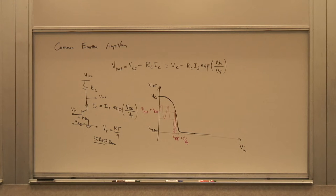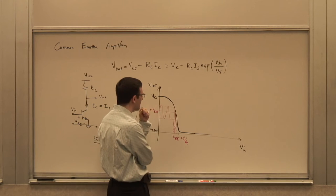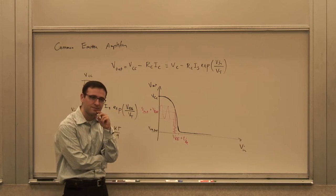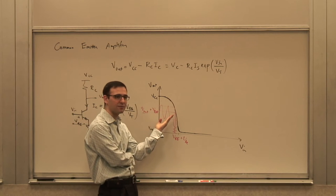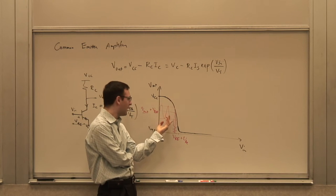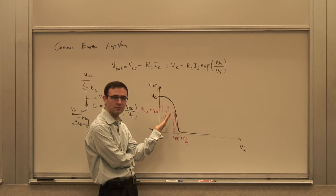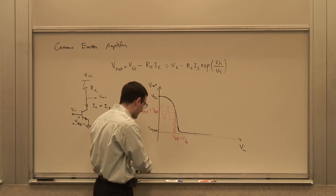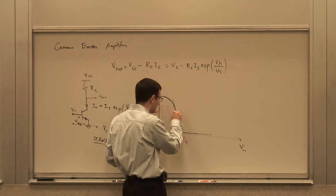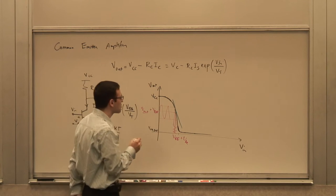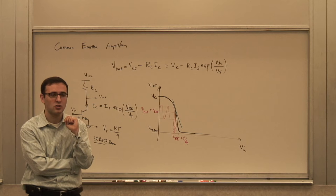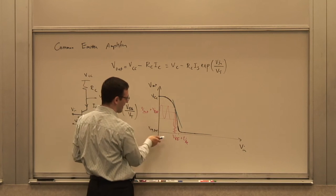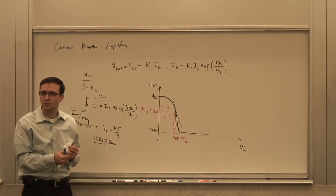Defining gain for a nonlinear system is tricky — it depends on the input. But for small inputs around an operating point, the gain is the slope of the tangent to the transfer curve at that point, which is dVout/dVin. We can already tell this is an inverted amplifier: you increase the input voltage, the output voltage goes down — negative gain.